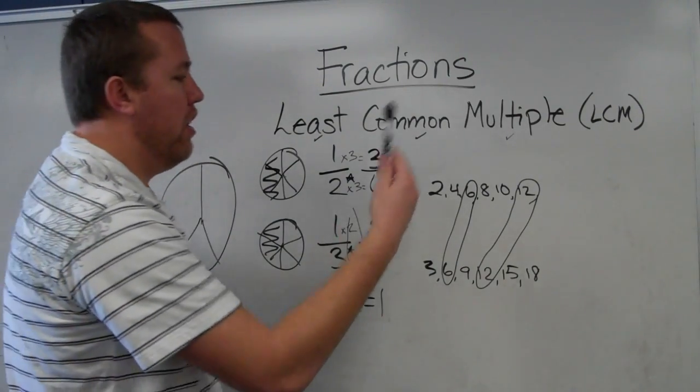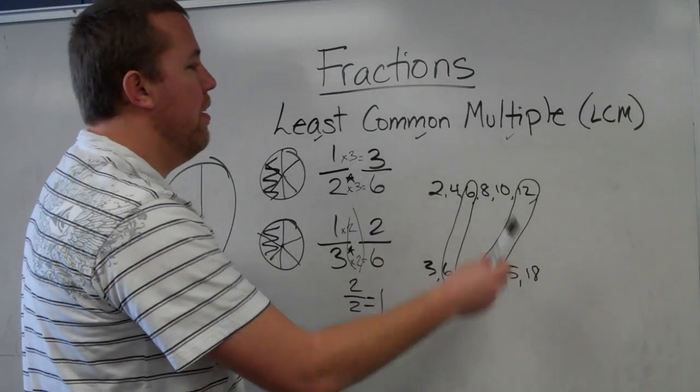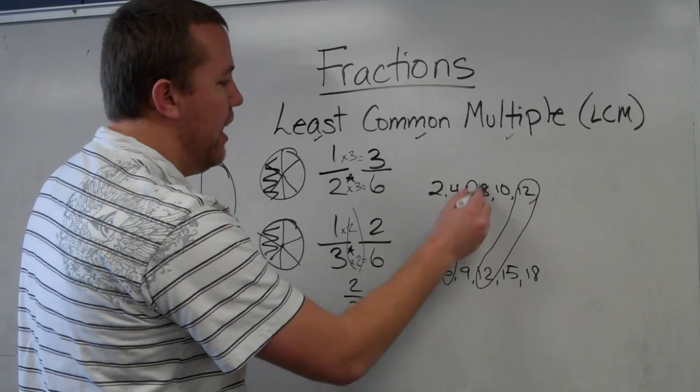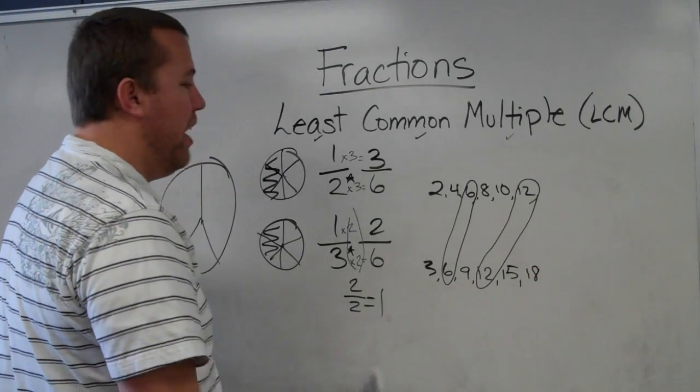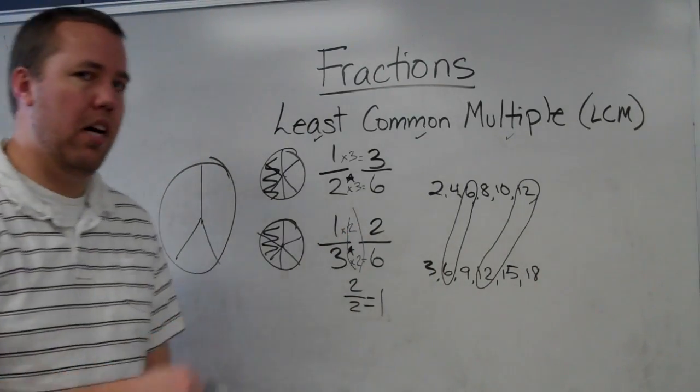So, first off, you list the multiples. You find what's common between them. And then, you find the smallest same number there and make that your new denominator. That is the least common multiple.